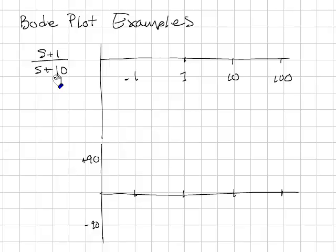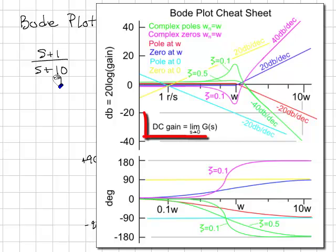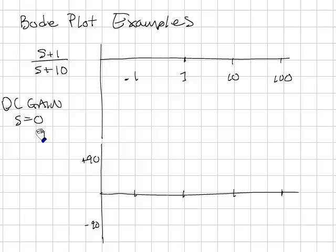The first step is to find the DC gain of the system. Set s equal to 0. And we have 1 tenth. We now need that in terms of dB: 20 log of 1 tenth is equal to minus 20.